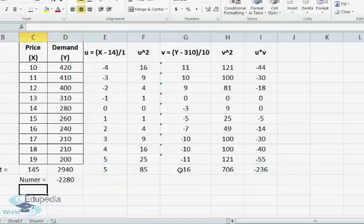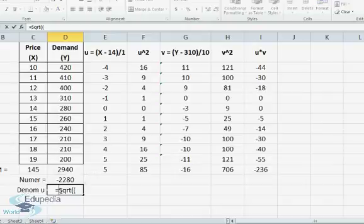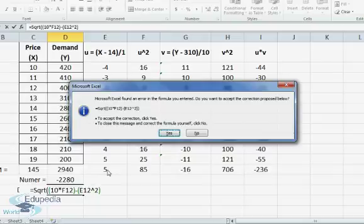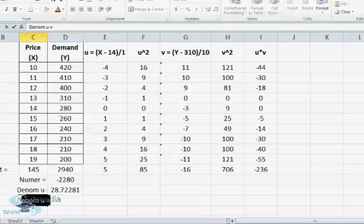Okay, then denominator. Denominator for u would be square root of n multiplied by u square, u square is here, minus summation of u the whole squared. Well there's one parenthesis missing. Yeah it's done.